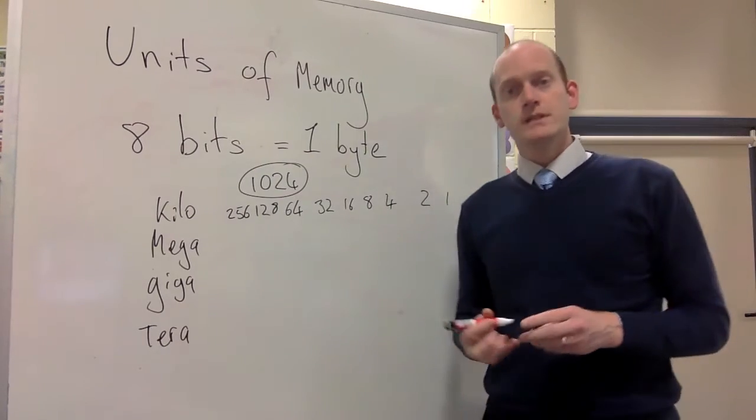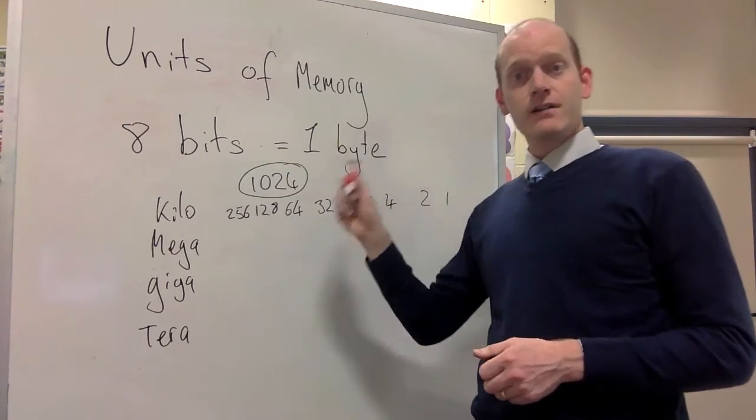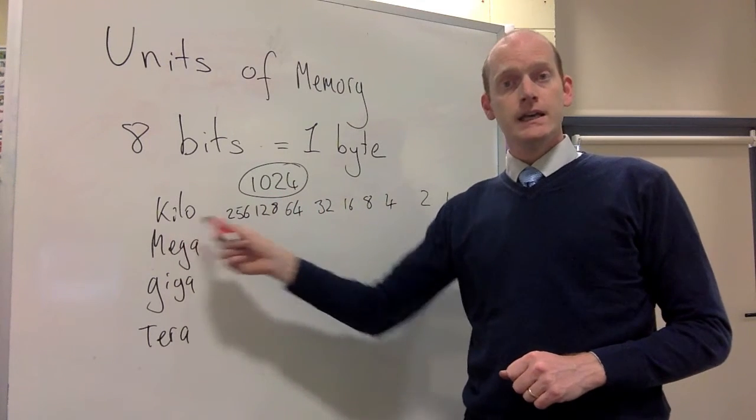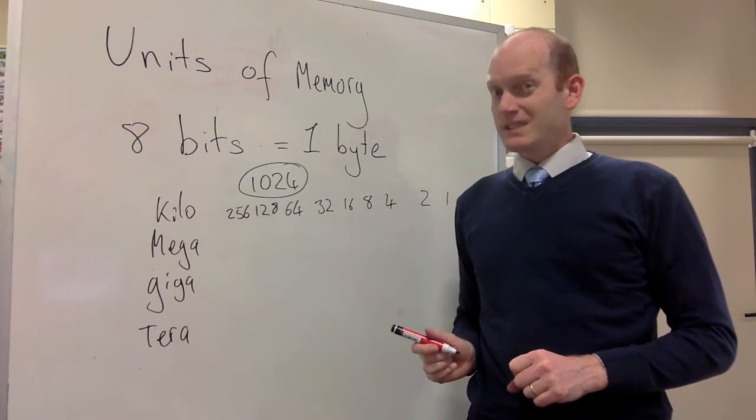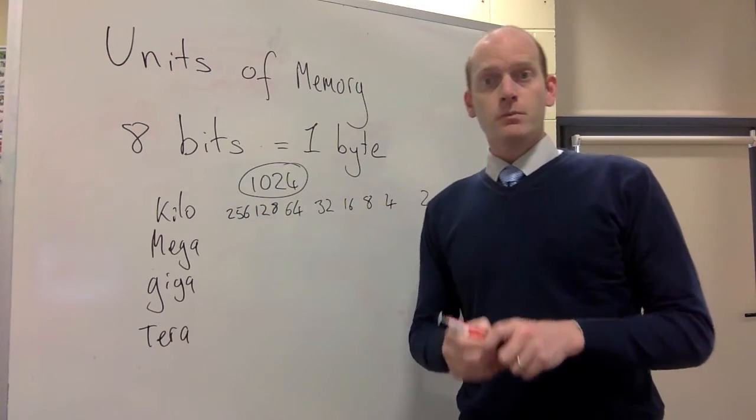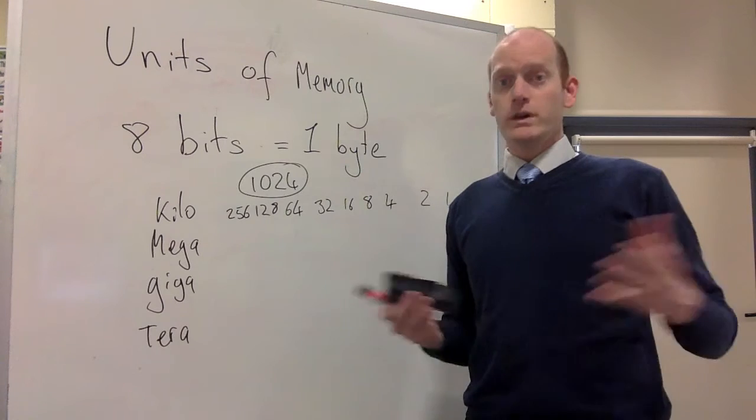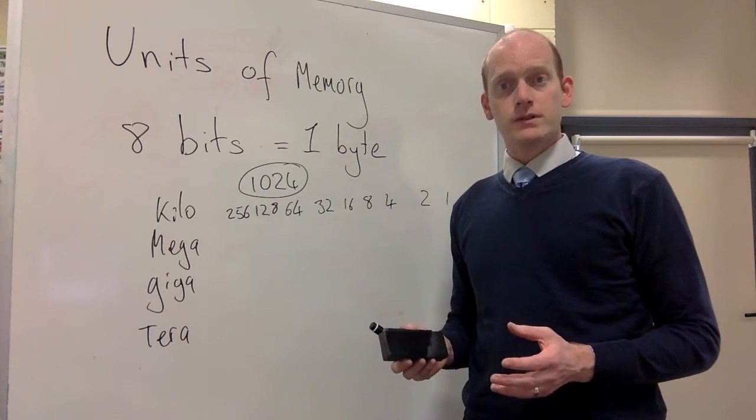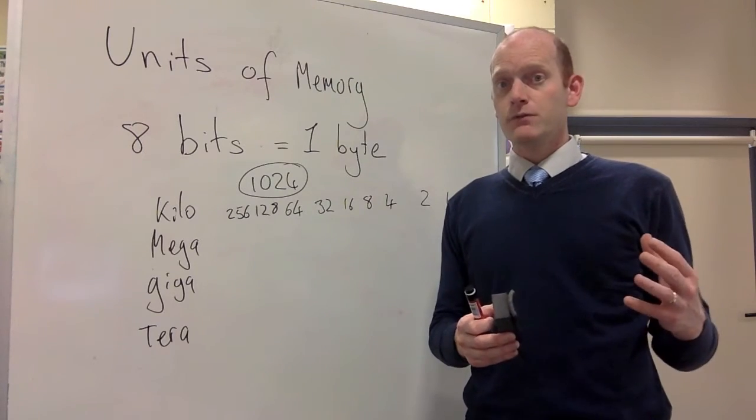Now in computing terms, because we didn't have a descriptor for 1024, we applied the term kilo. But some people are sticklers and have always used kilo to mean 1,000. So computer programmers have had to decide which one do they use. Do they use 1024, or do they use 1,000? And some people use 1,000, and some use 1024.